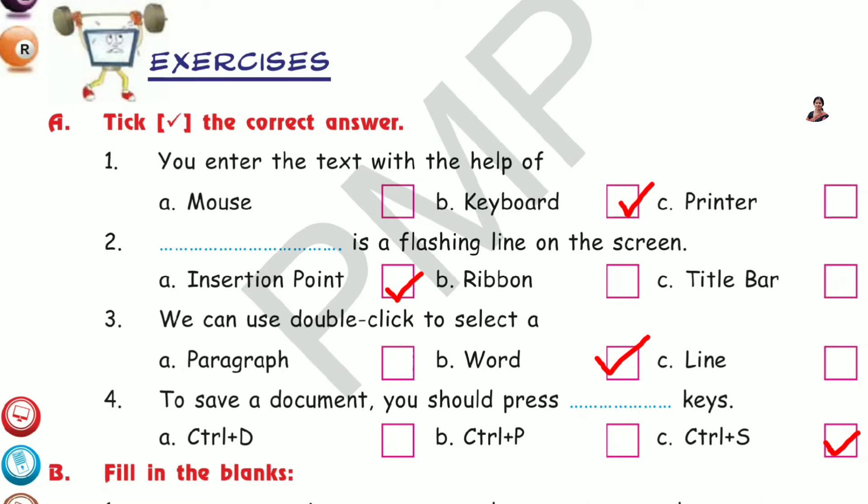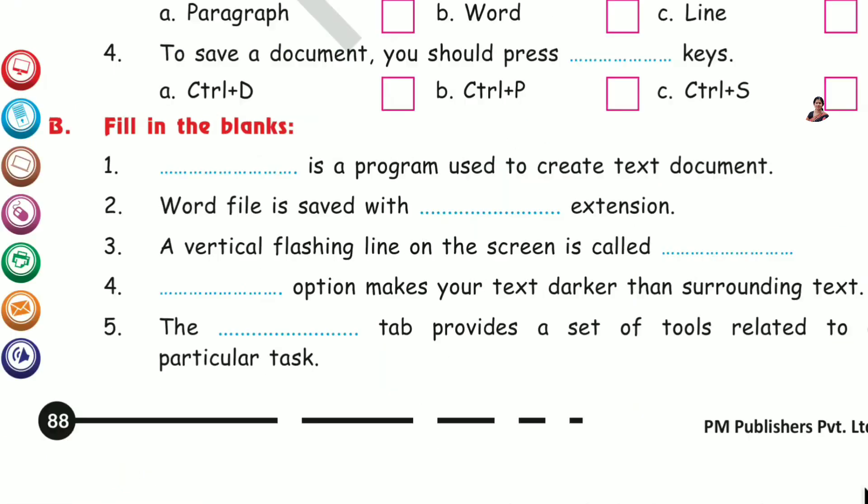Answers are given here. See the answers. Now B. Fill in the blanks. Number 1. Dash is a program used to create text document. Yes, MS Word is a program used to create text document.